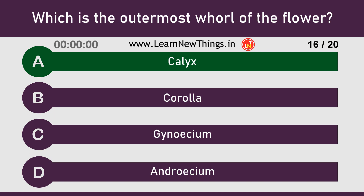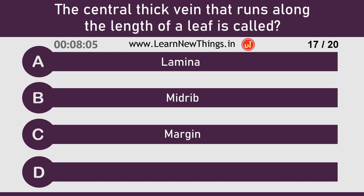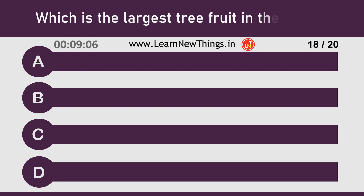Calyx. The central thick vein that runs along the length of a leaf is called Midrib. Which is the largest tree fruit in the world?